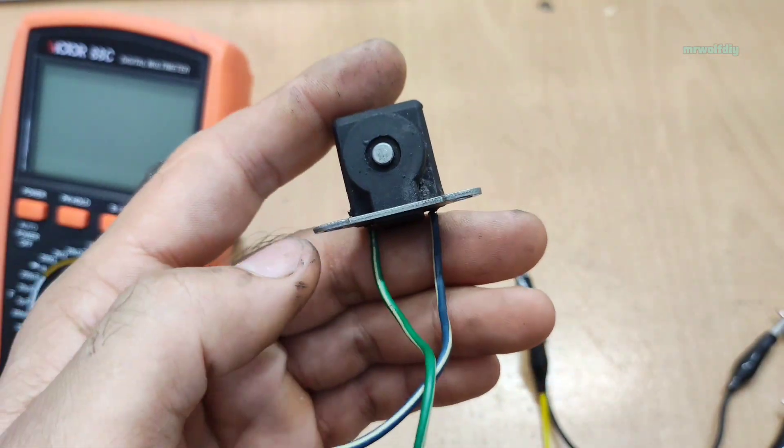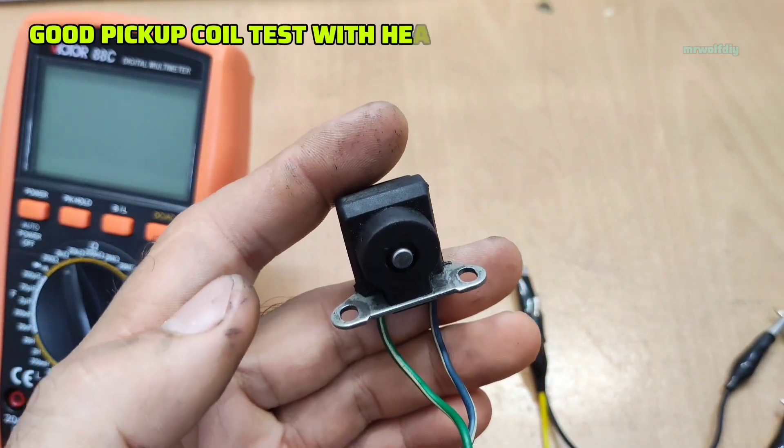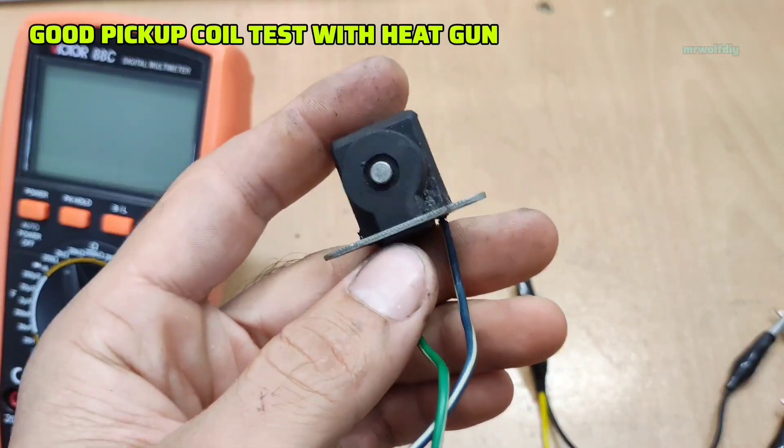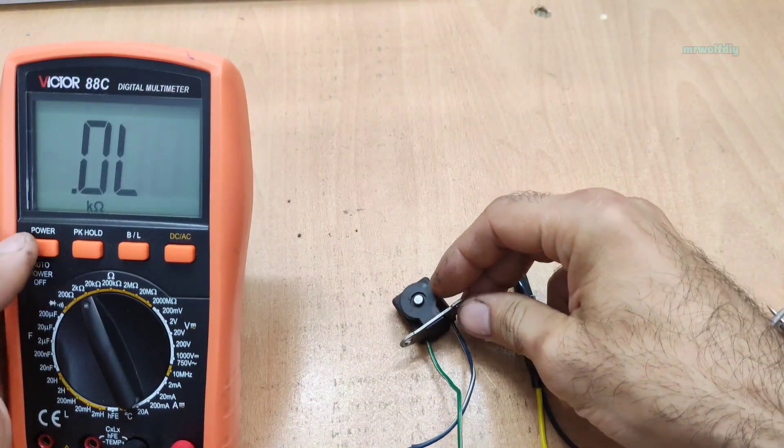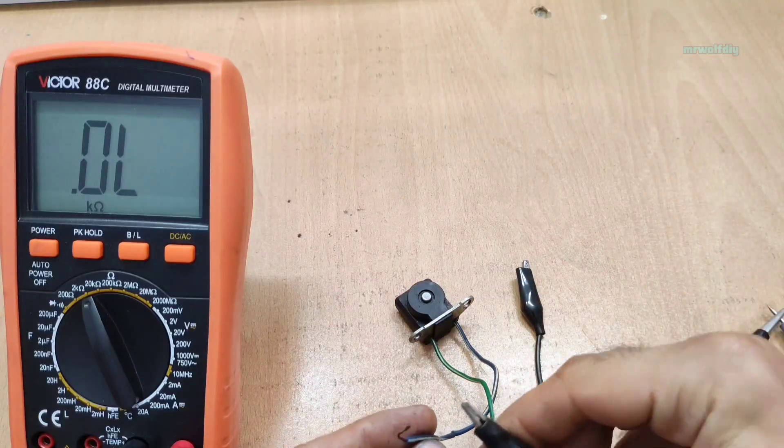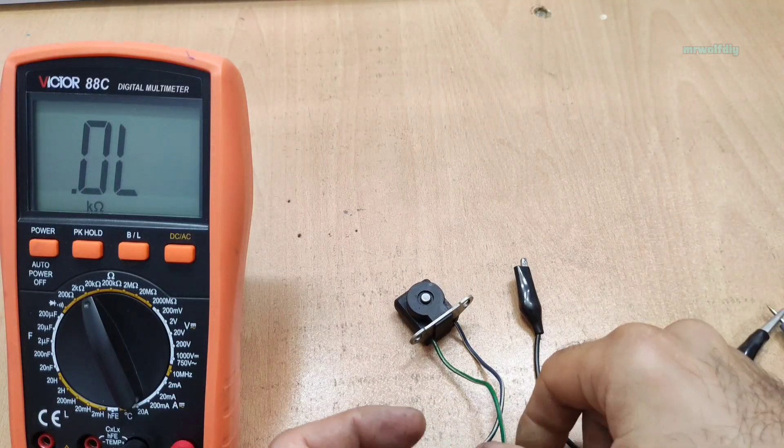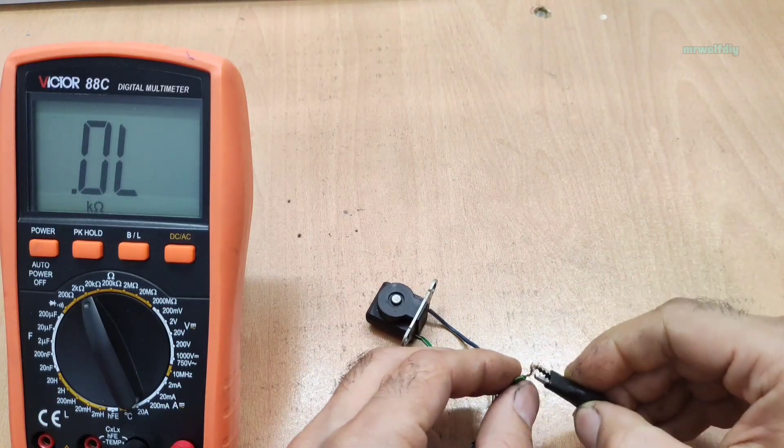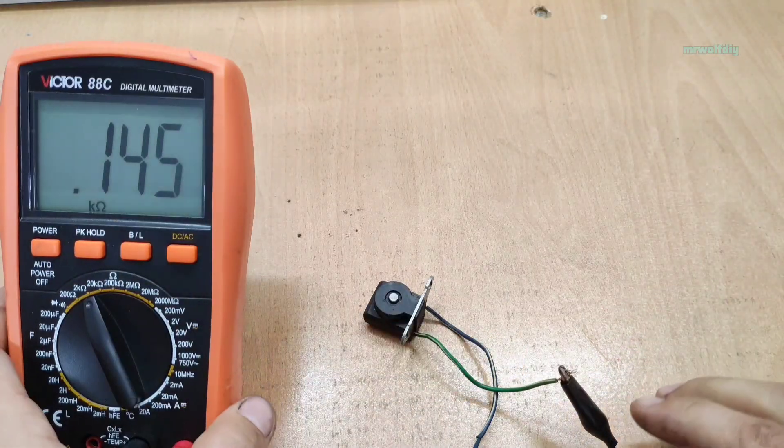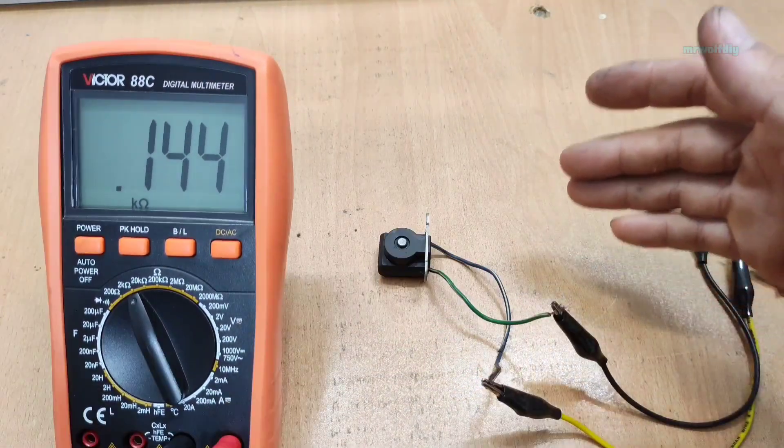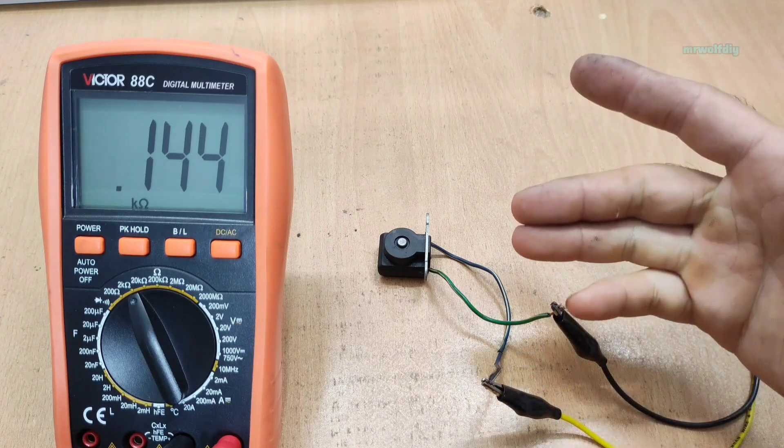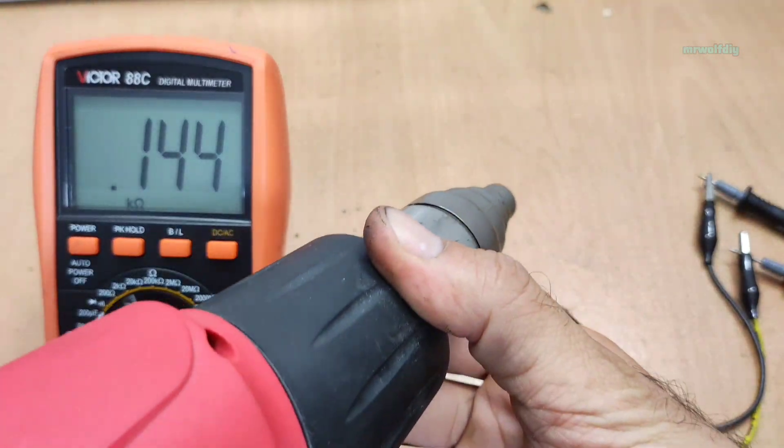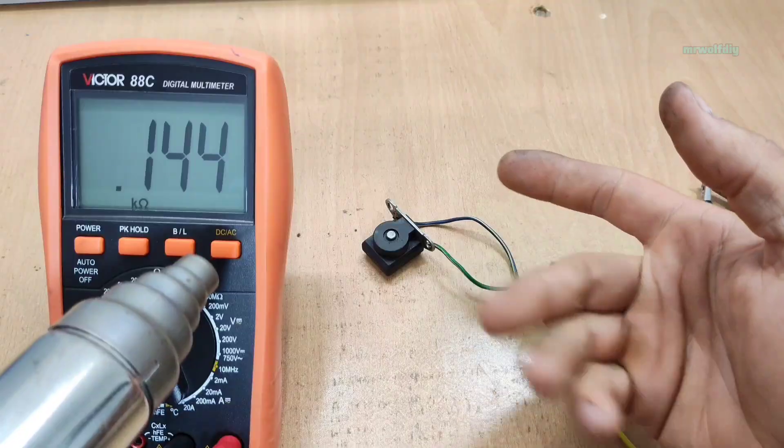Here I have another pickup that is healthy. Let's check its resistance value first. As you can see, the resistance value is normal when it's cold. Now, let's heat it up and see what happens.